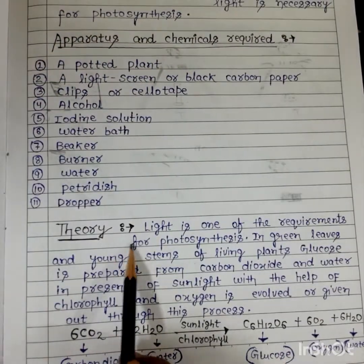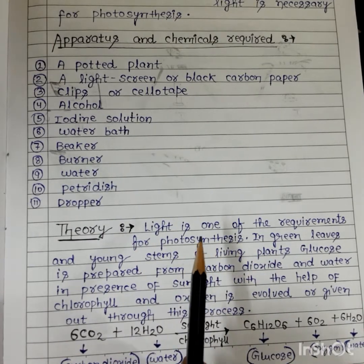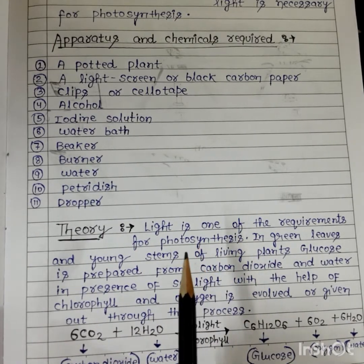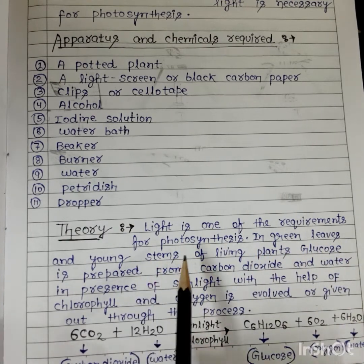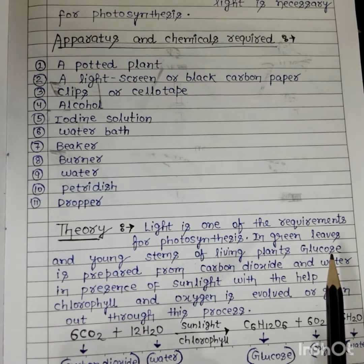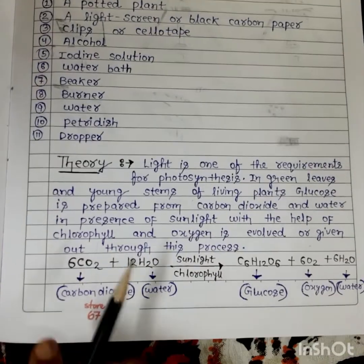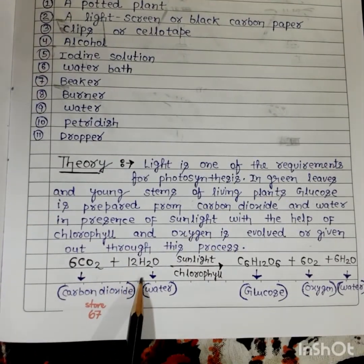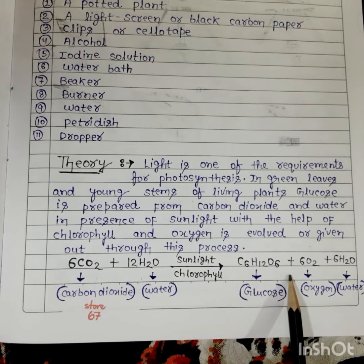Then we have to write some theory. Light is one of the requirements for photosynthesis. In green leaves and young stems of living plants, photosynthesis happens. Glucose is prepared from carbon dioxide and water in the presence of sunlight and chlorophyll, and oxygen is evolved. The equation is: 6CO2 + 12H2O, in the presence of sunlight and chlorophyll, gives C6H12O6 + 6CO2 + 6H2O.